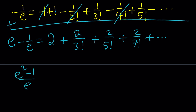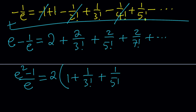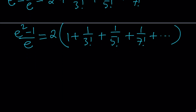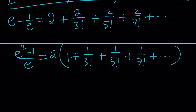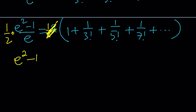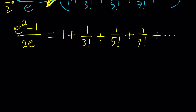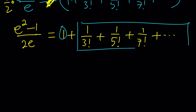We can write this as (e squared minus 1) over e, and then factor out a 2: 1 plus 1 over 3 factorial plus 1 over 5 factorial, and so on — because everything came with a factor of 2. Now multiply both sides by 1/2, so the 2s cancel. On the left-hand side we have (e squared minus 1) over 2e, and on the right-hand side we have our expression with an additional 1. We don't want that 1, so subtract 1 from both sides.